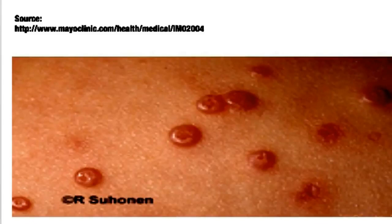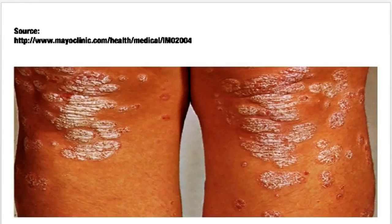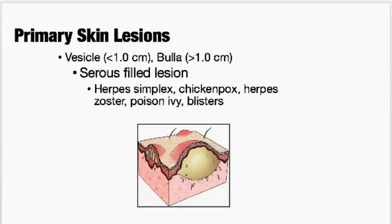Here's psoriasis — this is that rapid buildup of rough, scaly skin that occurs as the skin cells rapidly increase. Those dead cells accumulate and cause that thick, silvery scaling, causing itchy, dry, inflamed patches and plaques. These can sometimes be painful and sometimes split open and bleed. Really common on the extensor surfaces of joints.